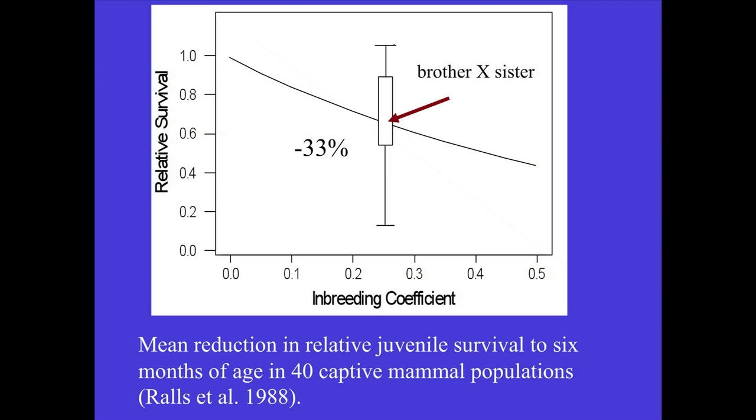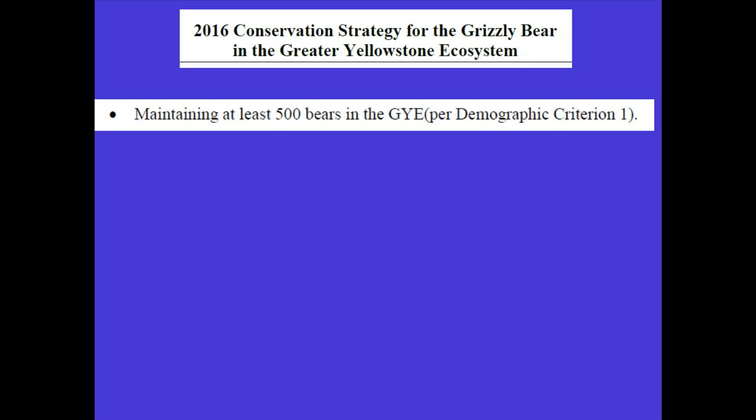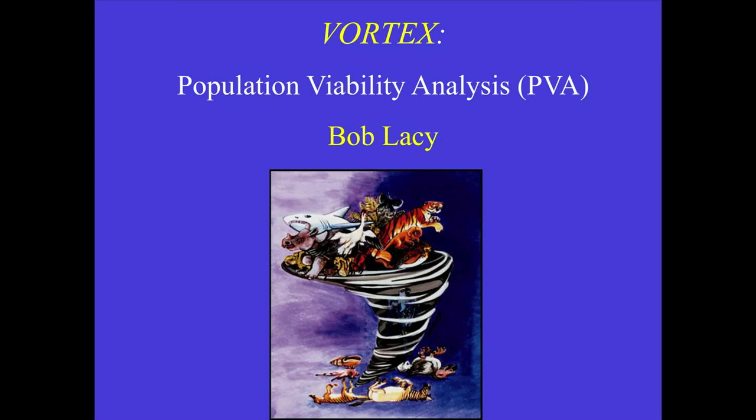Keep in mind that data from the zoo understates the problem — we would expect inbreeding depression survival to be even more reduced in the wild. A 2006 paper compared measures of inbreeding depression in wild populations to zoo populations. Applying this to grizzly bears, the 2016 conservation strategy for the Yellowstone ecosystem had a goal of maintaining at least 500 bears. So we can ask: is a population size of 500 bears large enough to avoid the harmful effects of inbreeding depression?